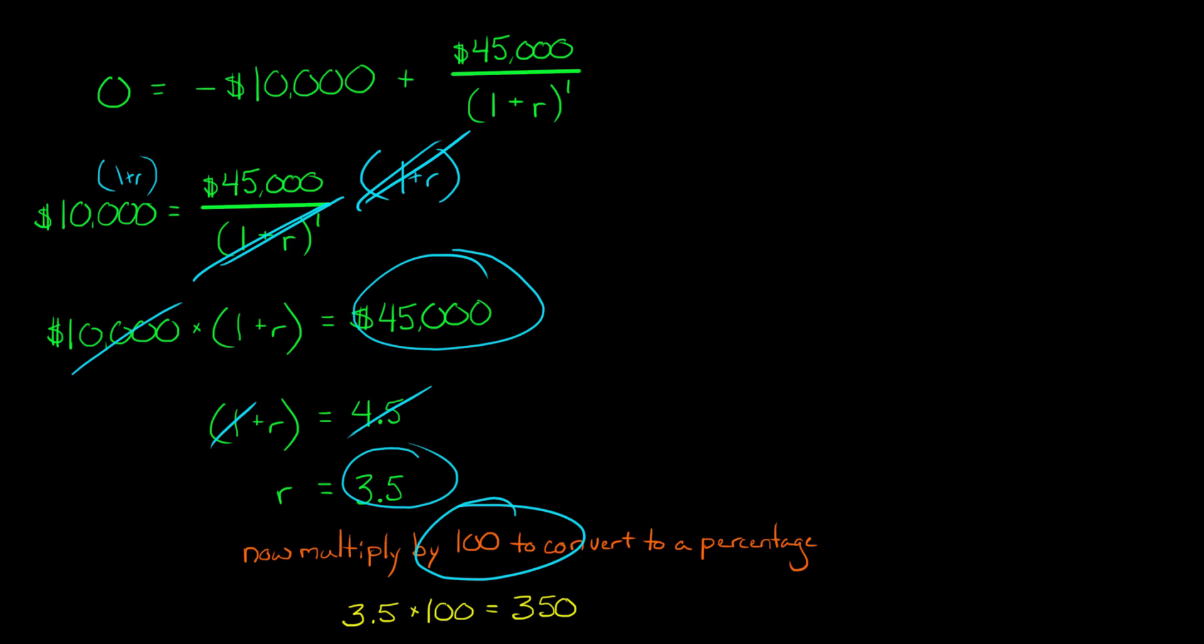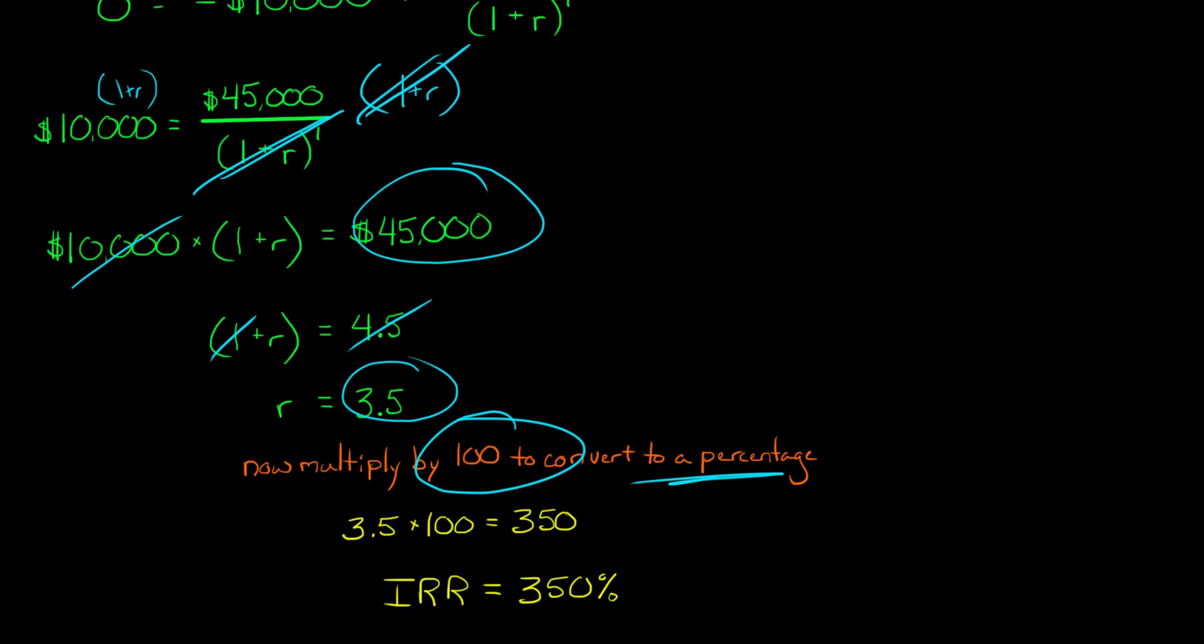You have to multiply that by a hundred to convert it to a percentage. So we're going to take 3.5 and we're going to multiply that by a hundred. And that gives us the number of 350. And what this 350 is, is the IRR. So it's an IRR of 350% for this project.